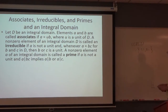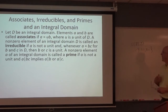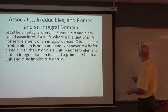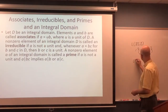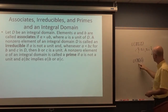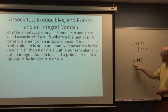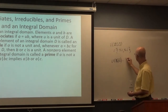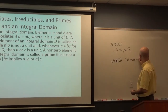In fields, every non-zero element is a unit, and therefore every non-zero element is associated to every other non-zero element in fields. In R[x], the ring of polynomials with real coefficients, the units there are non-zero constant polynomials — there are infinitely many of them — though any polynomial with degree bigger than zero would not be a unit. This is not a field, even though R is.